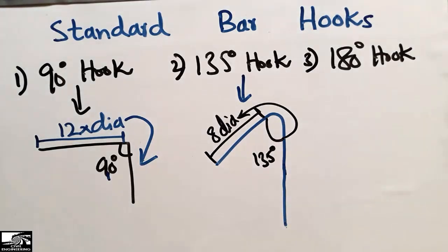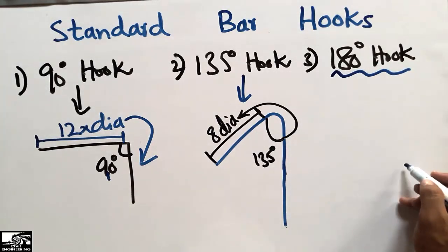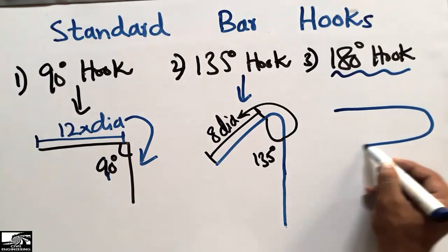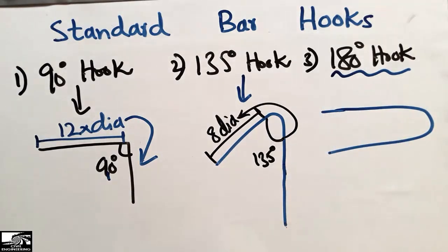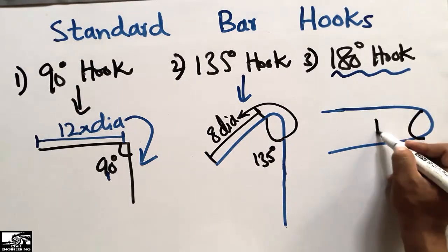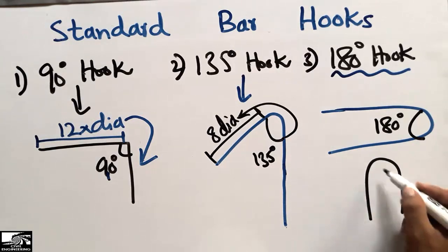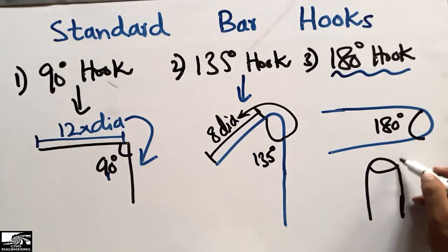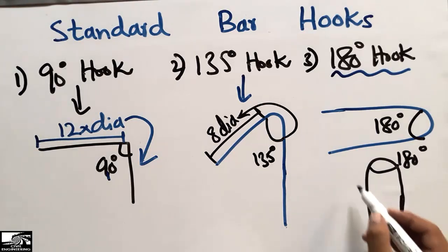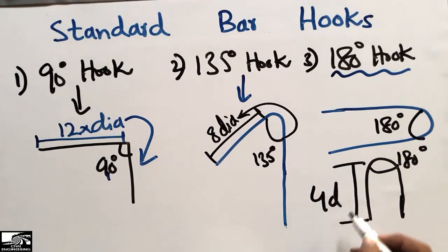The third and last hook is the 180-degree hook, meaning the hook is bent at 180 degrees as shown. In this case, the bending length is equal to 4 times the diameter of the bar (4D).